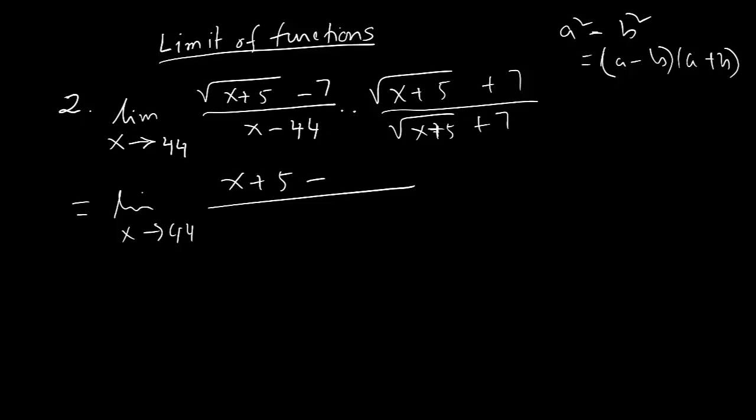And then I have here x minus 44 times 1 over that one. I have simplified so this one will stay x plus 5 plus 7.